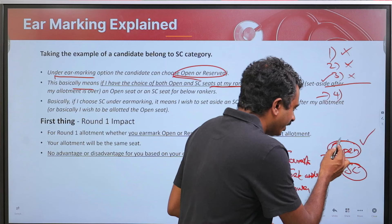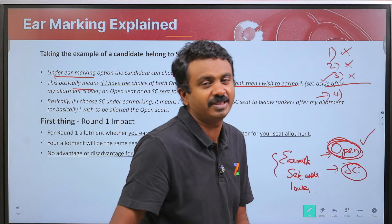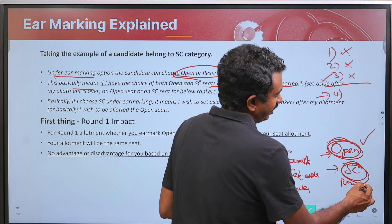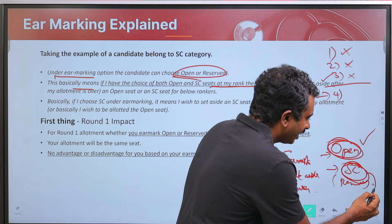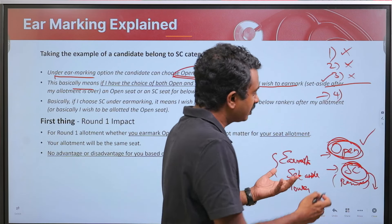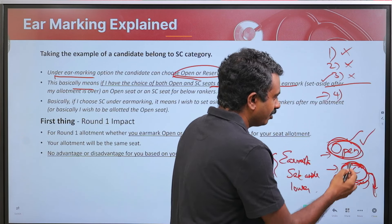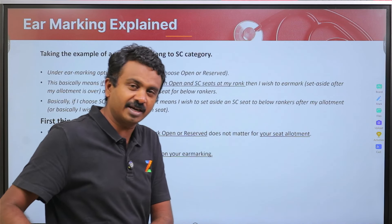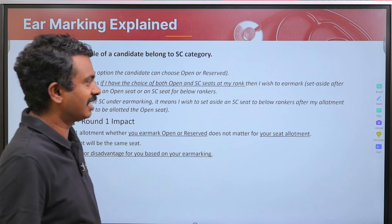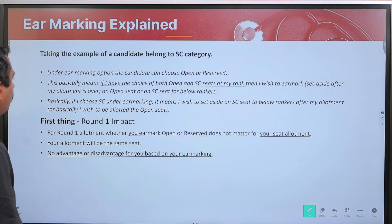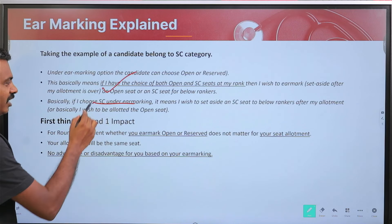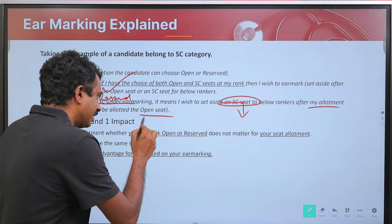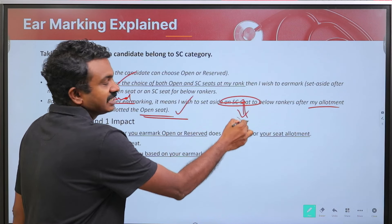If you want to set aside the open seat, you choose open — meaning for lower rankers you are giving an open seat. If you want to set aside an SC seat for lower rankers, you choose reserved or SC. If you earmark a reserved seat, that seat will be set aside for lower rankers, which means the open seat will be allotted to you. Whatever you set aside goes to the lower ranker; whatever you don't set aside comes to you.